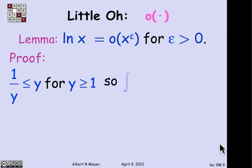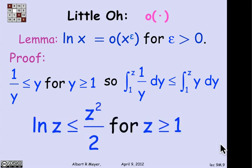Well, that means that I can integrate both sides starting at 1. So if I take the integral of 1 over y from 1 to z, it's going to be less than or equal to the integral of y from 1 to z. Well, integral of 1 over y is log z, and the integral of y to z is z squared over 2. So what we get is this new inequality: the log of z is less than or equal to z squared over 2 for z greater or equal to 1.